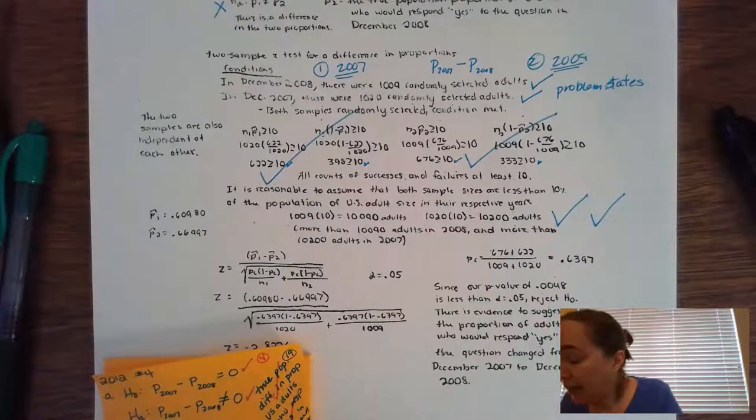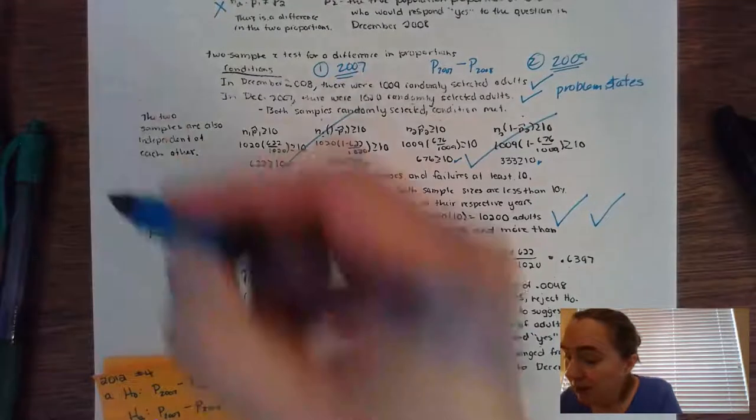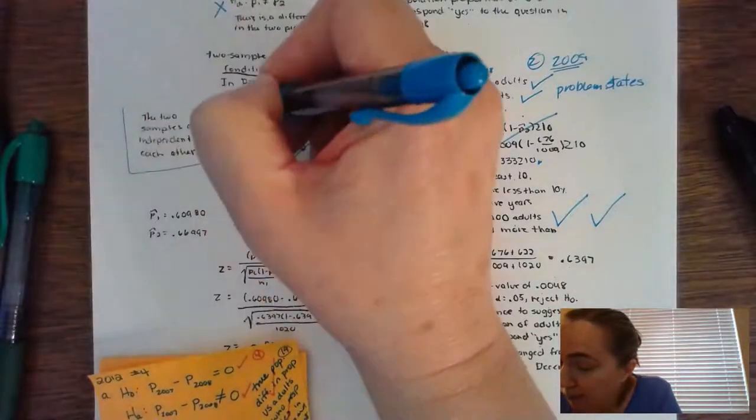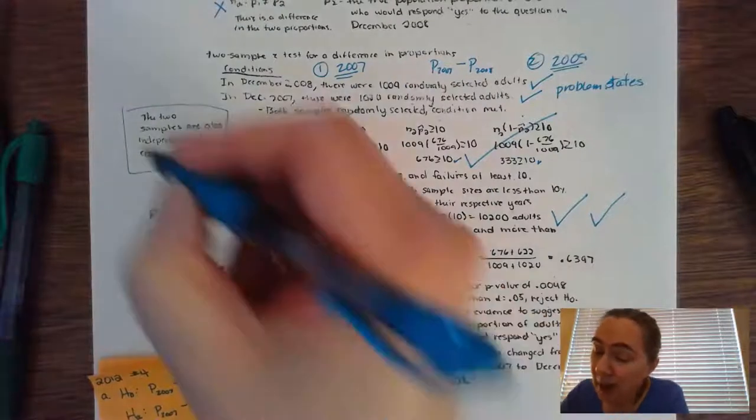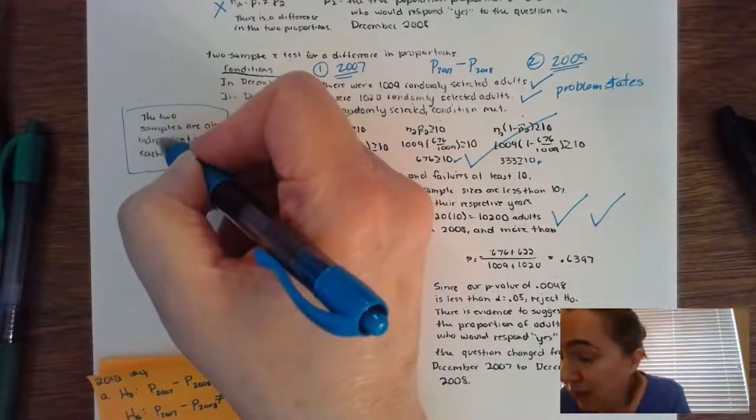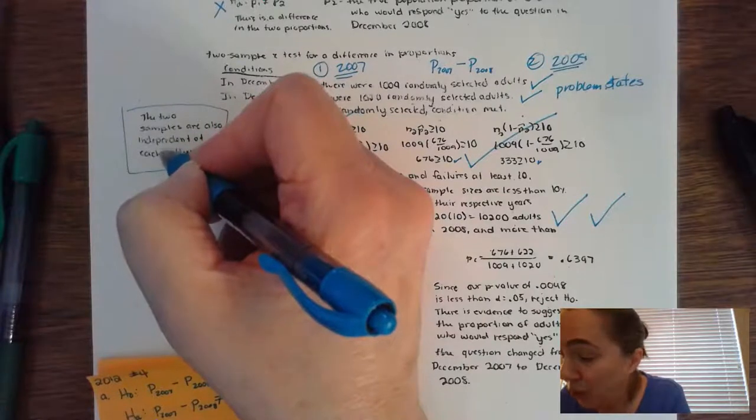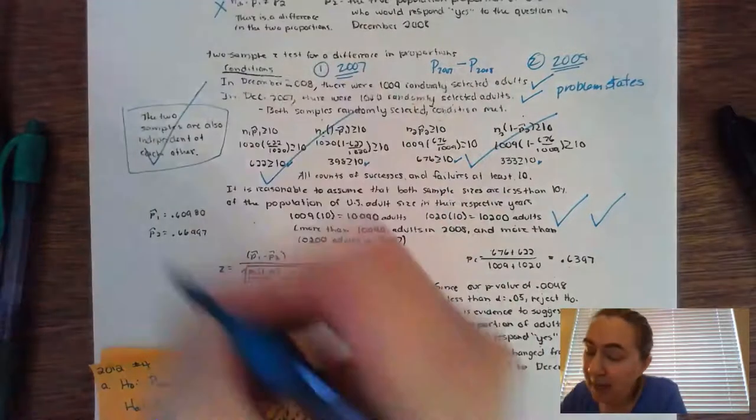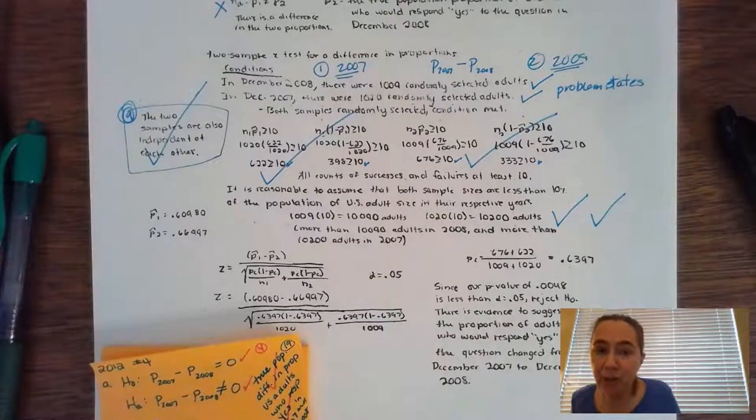So now I'm looking for the independent groups assumption. And they did it right here. It doesn't have context in there. I would say that the 2007 U.S. adults are independent of the 2008 U.S. adults, but they are going to get, that is their condition number nine, they are going to get that check.